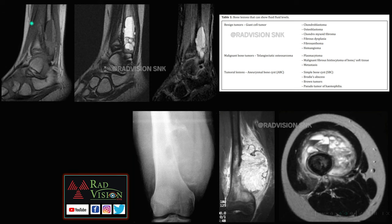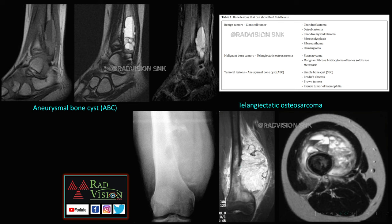A well-defined bony lesion with narrow zone of transition, cortical scalloping, and multiple fluid-fluid levels is a case of aneurysmal bone cyst. A large lesion with wide zone of transition, cortical breach, periosteal elevation, destruction, significant soft tissue component extending into soft tissues and medullary cavity with marrow edema, and multiple fluid-fluid levels — this was telangiectatic osteosarcoma.